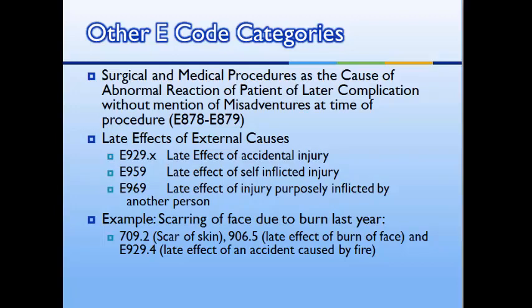There are additional E-code categories that can be used to report patient abnormal reactions to procedures that are not due to any wrongdoings by the doctor or facility. For example, if a patient returns for a non-healing surgical wound, we want to use the appropriate E-code to provide information that the patient's condition was not caused by something the doctor or facility did incorrectly.